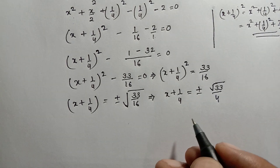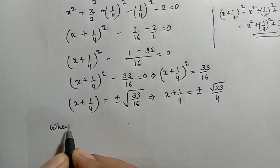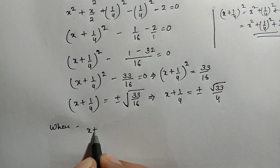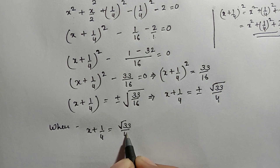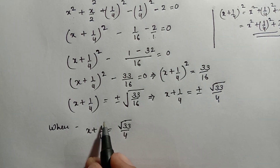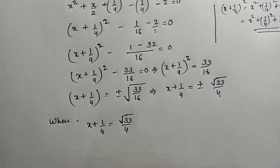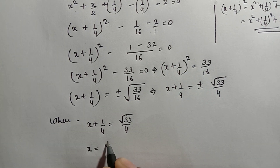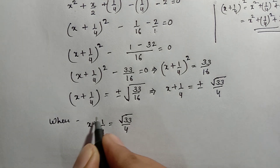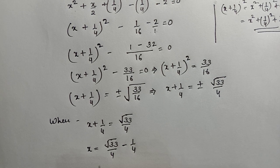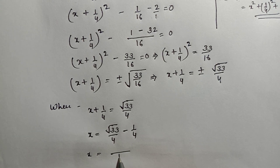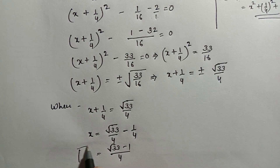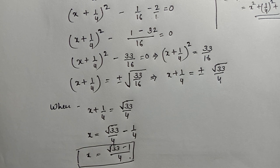Now we solve for the two roots. Taking the positive case first: x + 1/4 = +√33/4. Moving 1/4 to the other side (it becomes negative): x = √33/4 - 1/4 = (√33 - 1)/4. This is your first root.